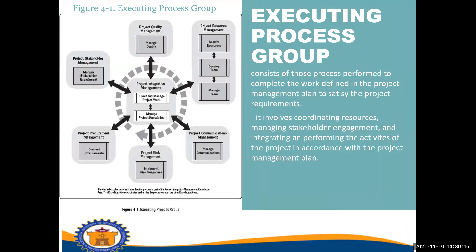The Executing Process Group consists of those processes performed to complete the work defined in the project management plan to satisfy the project requirements. This process group involves coordinating resources, managing stakeholder engagement, and integrating and performing the activities of the project in accordance with the project management plan. The key benefit of this process group is that the work needed to meet the project requirements and objectives is performed according to plan. A large portion of the project budget, resources, and time is expended in performing the Executing Process Group processes.